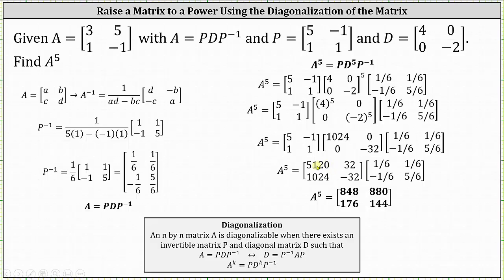Then we determine the final product. Row one, column one: 5120 times one sixth plus 32 times negative one sixth equals 848. Row one, column two: 5120 times one sixth plus 32 times five sixths equals 880. Row two, column one: 1024 times one sixth plus negative 32 times negative one sixth equals 176. Row two, column two: 1024 times one sixth plus negative 32 times five sixths equals 144.